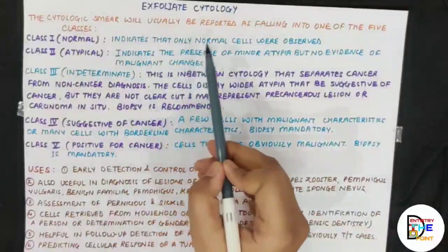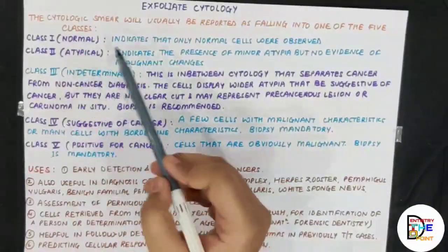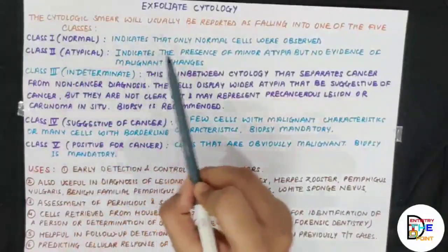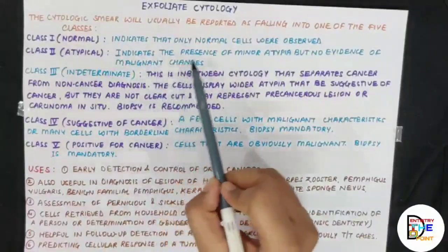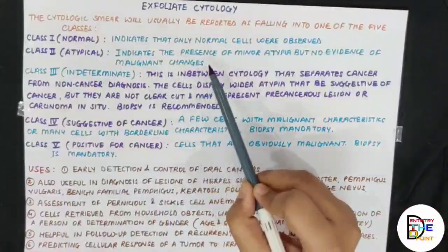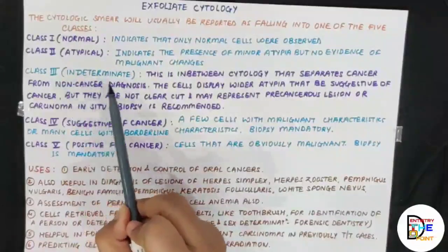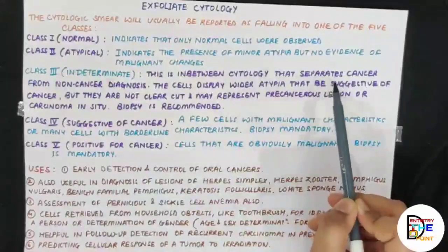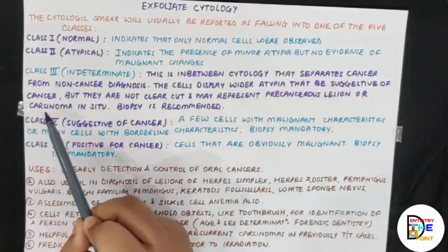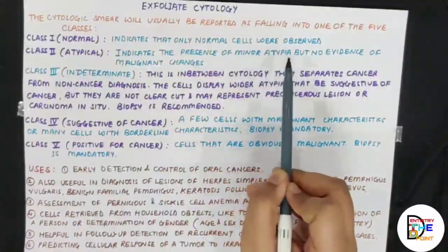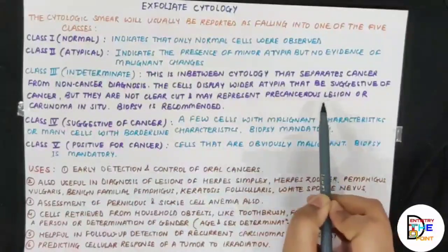The cytological smears will be reported as falling into one of five classes. Class 1 is normal — only normal cells observed with no pathology. Class 2 is atypical — presence of minor atypia but no evidence of malignant changes. Class 3 is indeterminate — cells display wider atypia suggestive of cancer but not clear-cut, possibly representing a pre-cancerous condition.